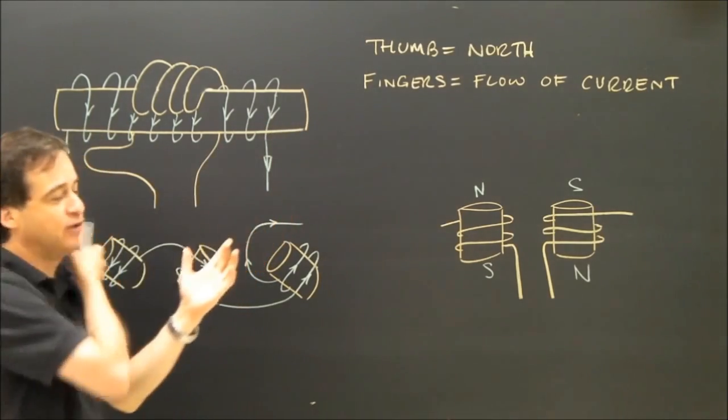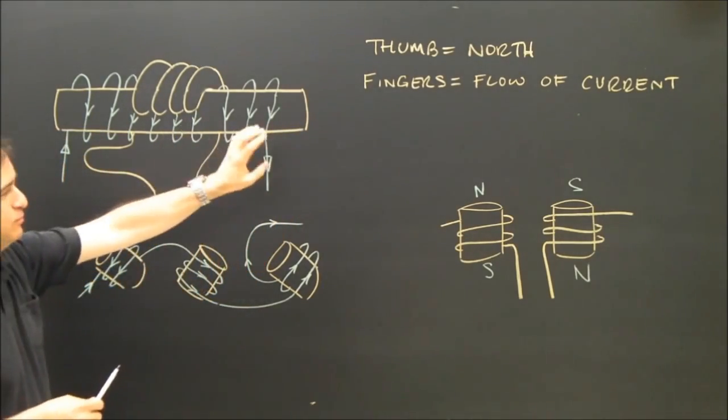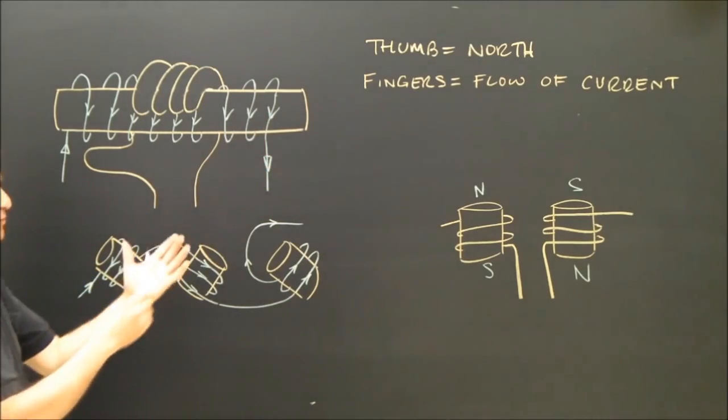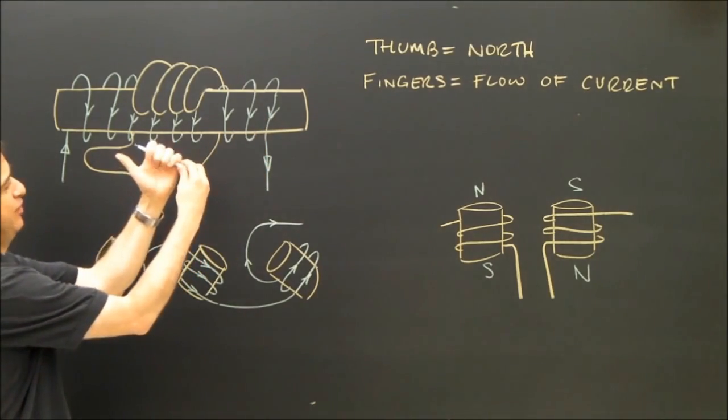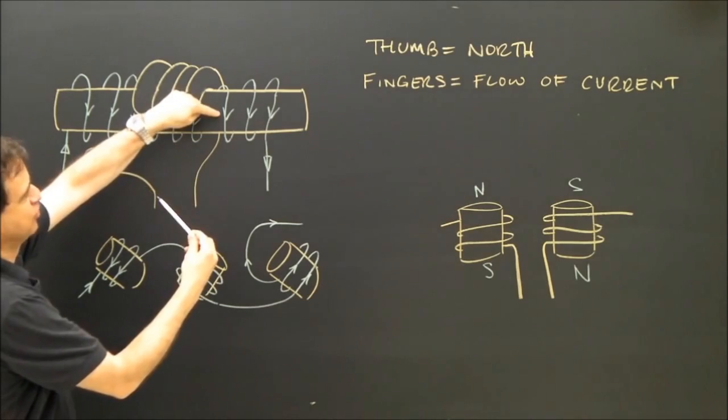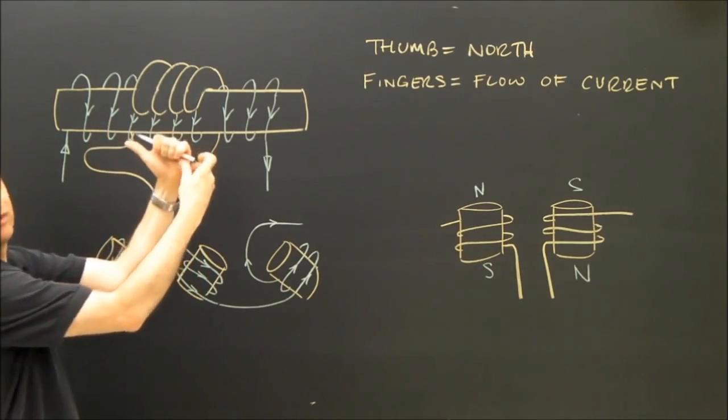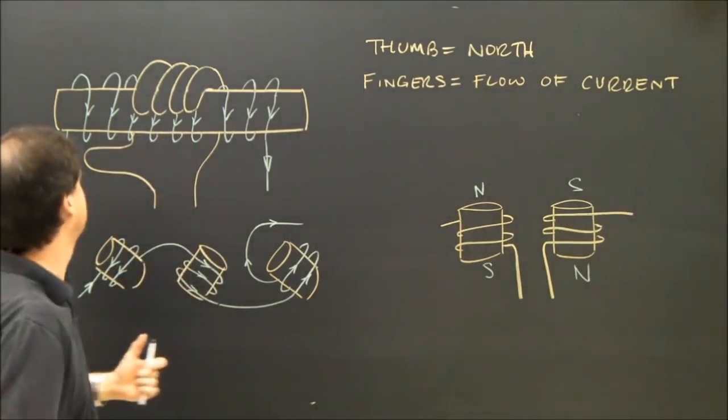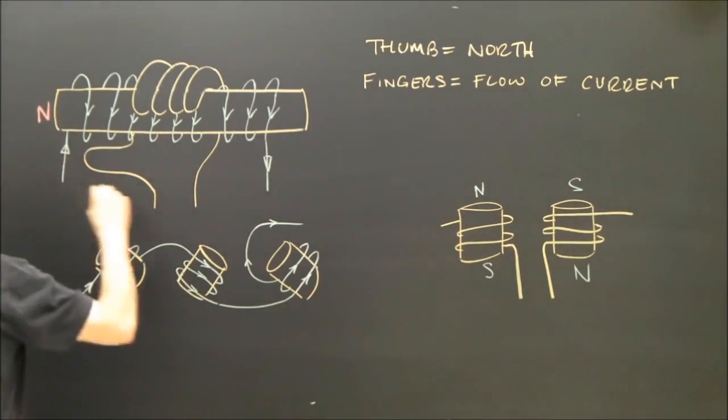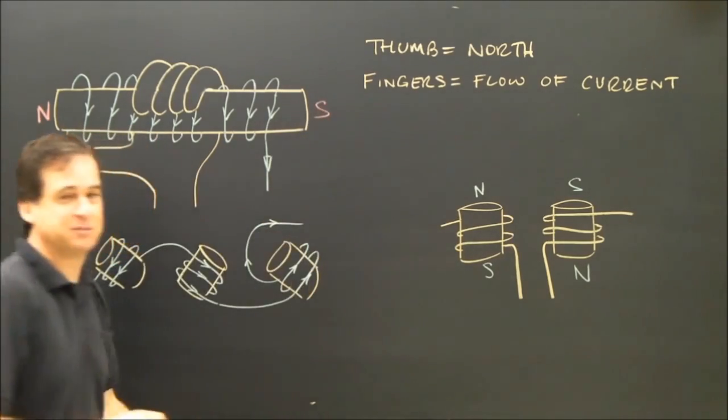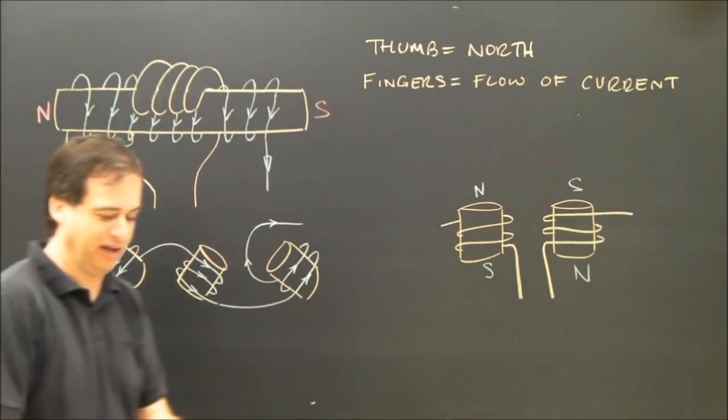My fingers are going to point in the direction of the flow of current. So my fingers on my left hand are going to wrap this way. My fingers on the front are going to be going down. As a result, my thumb is pointing to the left. That tells me that the left side must be north, and the right side must be south. It's really, really quite simple.